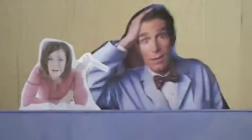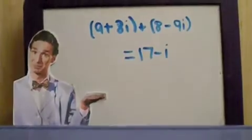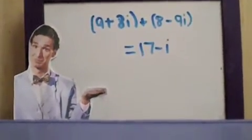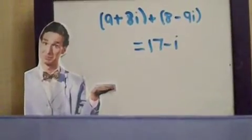Hey Bill, this is Laura. I'm really confused on this homework assignment. Can you help me? Alright, Laura. What do you need help with? Okay, the problem is 9 plus 8i plus 8 minus 9i. To do that, all you need to do is combine like terms. When you do this, you end up with 17 minus i.